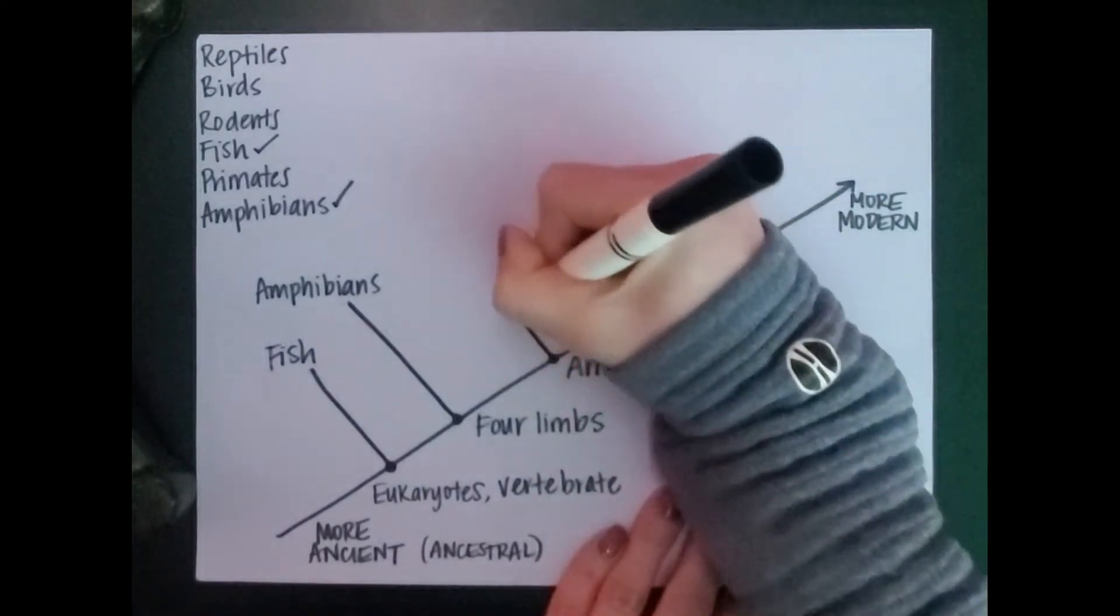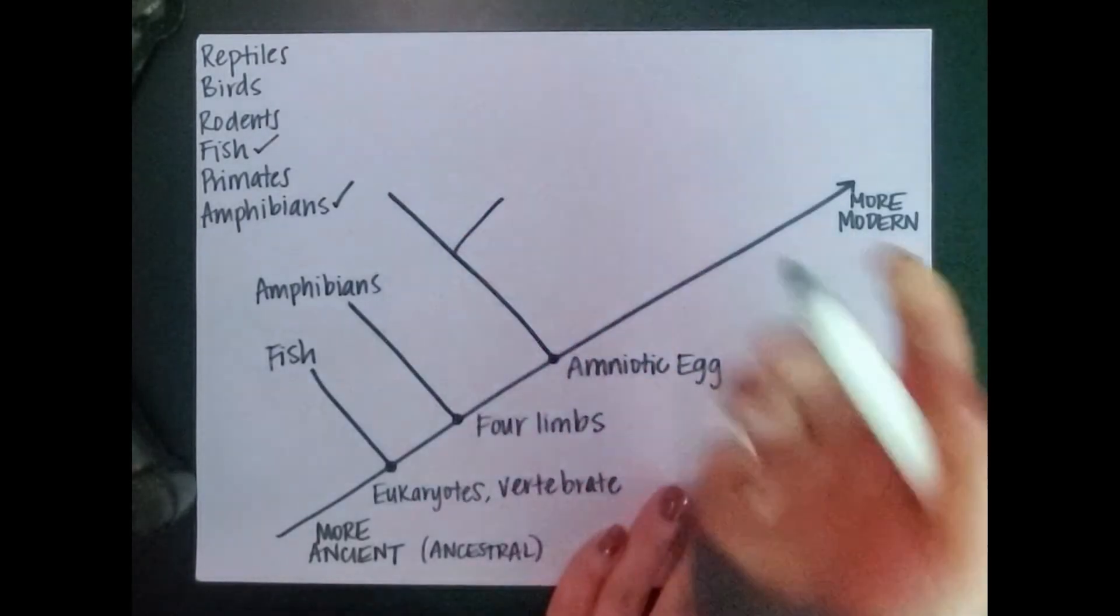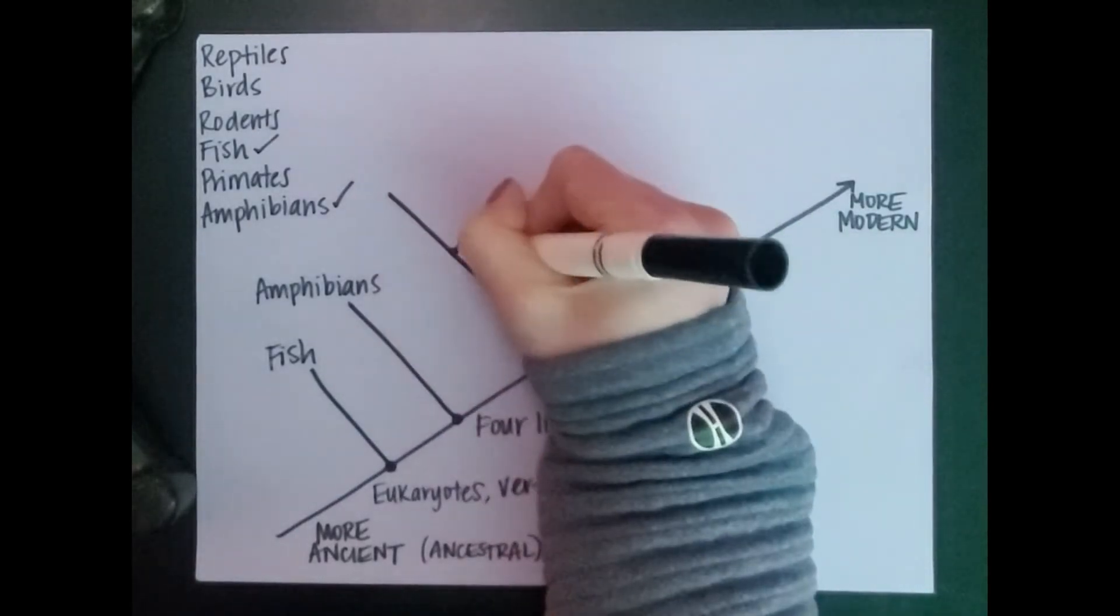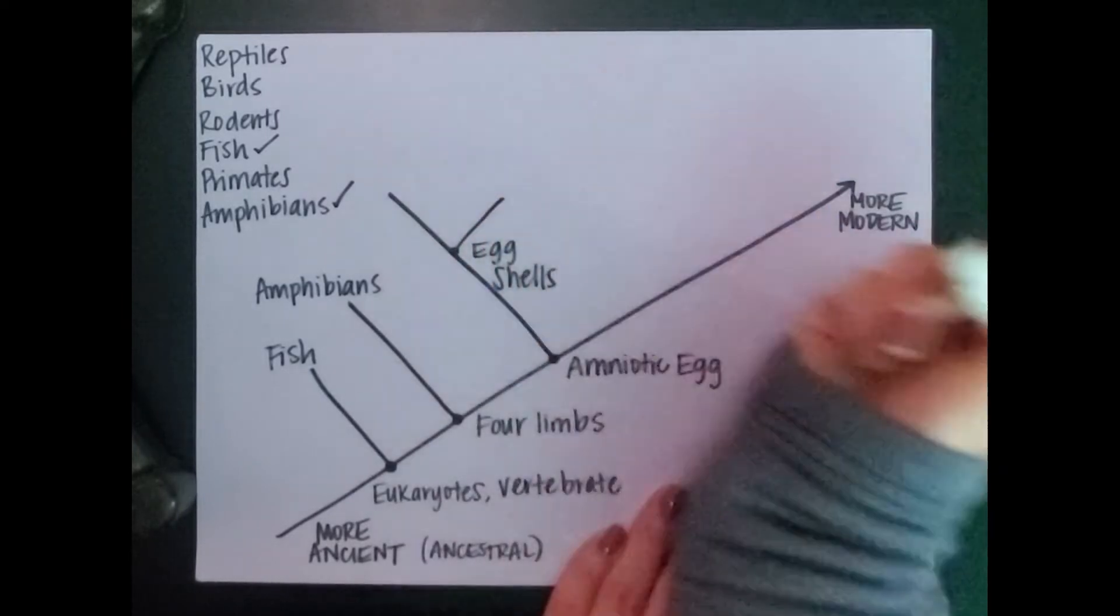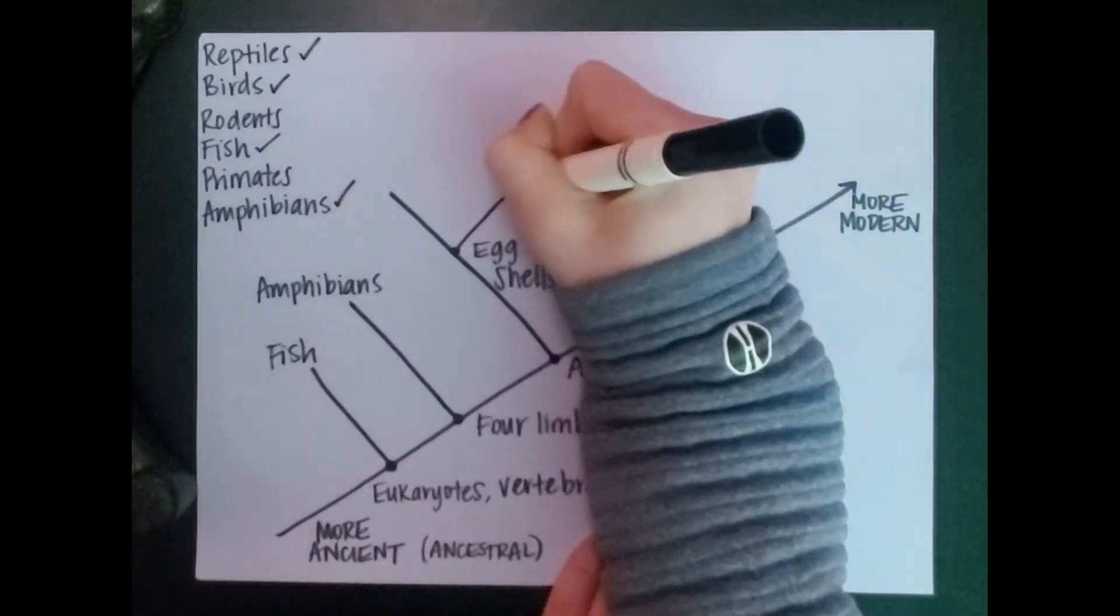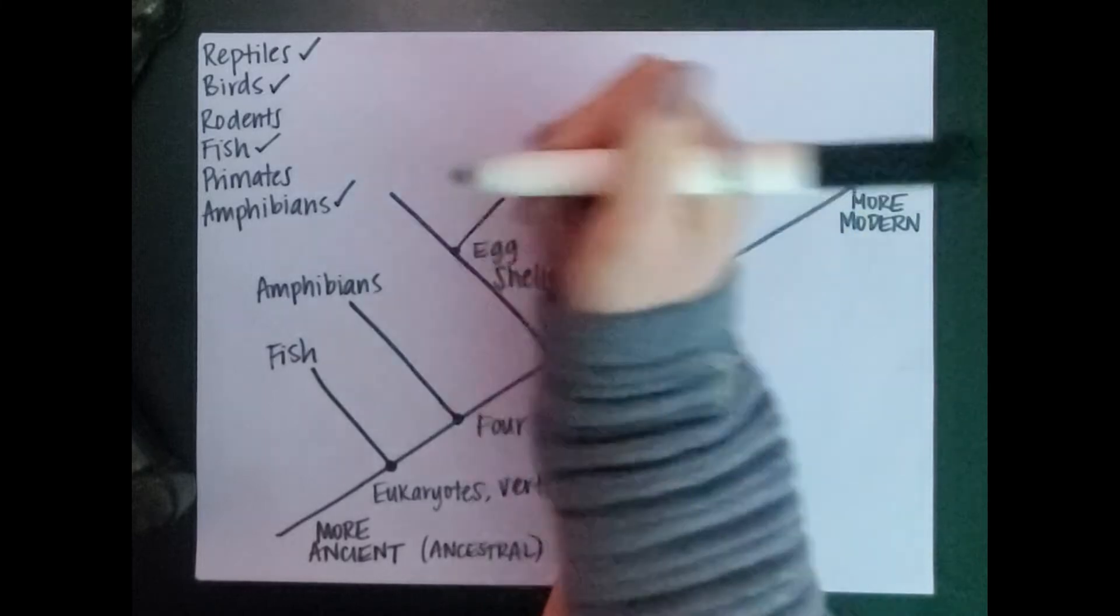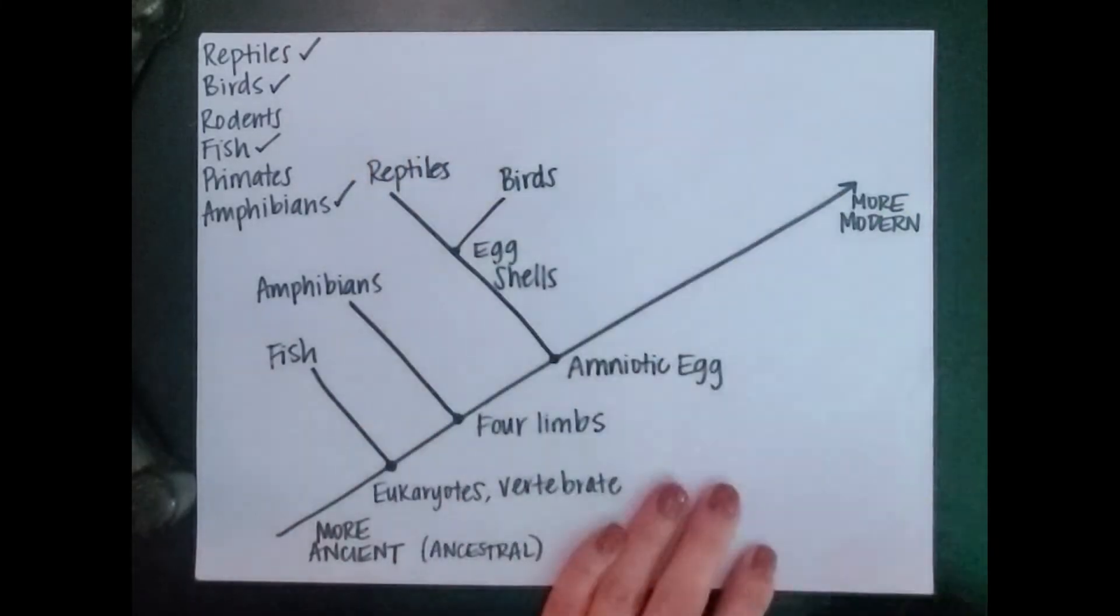Now we're going to diverge from the timeline here. Some of these have eggshells. And eggshells are components of bird eggs and reptile eggs. So they have that in common.